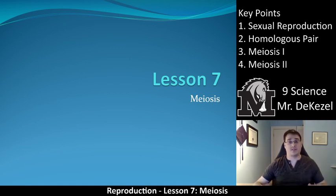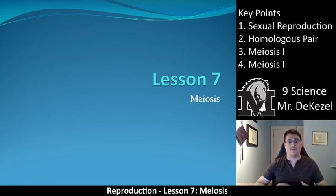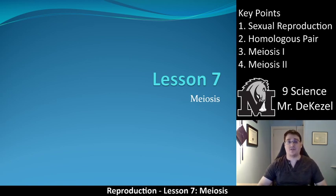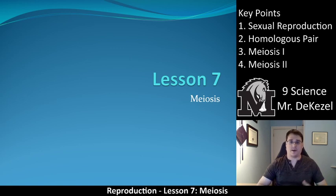If you're familiar with mitosis at this point, if you've done the work from the last lesson, this should be just like adding a few things on. There are just a few differences. And if you'll notice the key points above me, 3 and 4, there's actually two parts to meiosis, but they are so similar to mitosis that if you're familiar with it, it should be no problem. Our key points as well: sexual reproduction and homologous pair — we'll get into that.